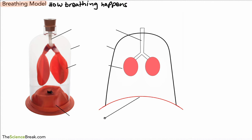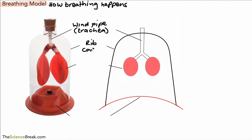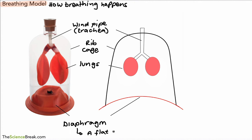You can follow along with the worksheet found in the description. The pipe leading in at the top is called the windpipe — the more technical science word is the trachea — which brings air into the body. The glass container represents the rib cage, with the ribs and all the muscles that surround the lungs. The balloons in red represent the lungs. At the bottom, we have a perhaps new label to learn: the diaphragm — a flat muscle that helps with breathing, found at the bottom of the lungs.